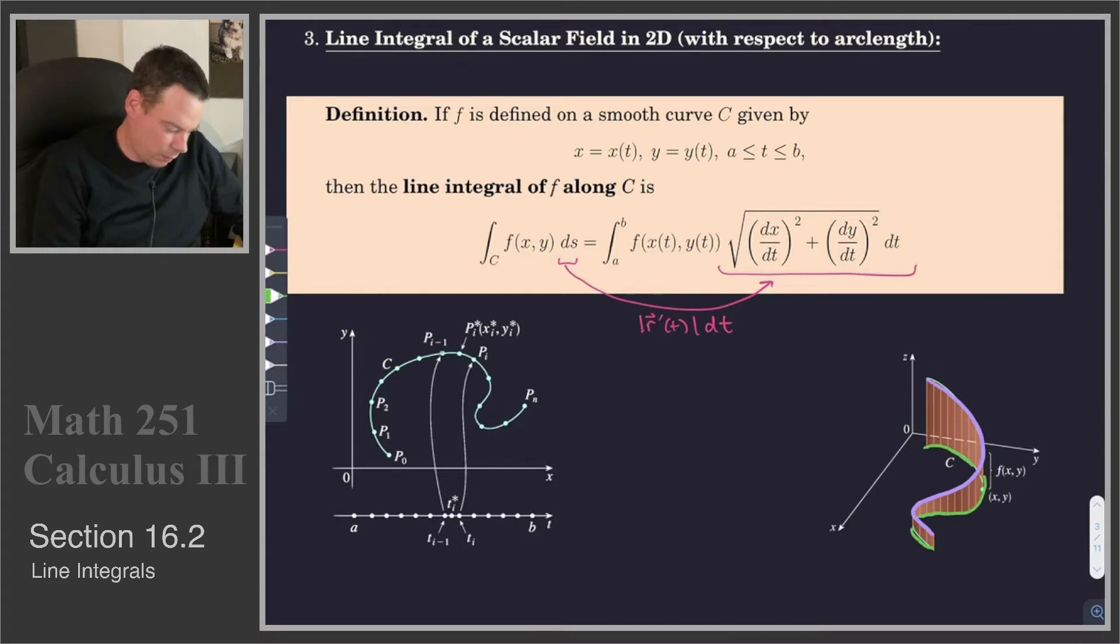So one of these segments, for example, is pᵢ₋₁ to pᵢ. So there's a little segment there. And if we go over to our curve, maybe it's this little segment right here. So there is our pᵢ₋₁, there's our pᵢ. And above that, then, we get this portion of our surface, a portion of our curtain that we want to find the area of.